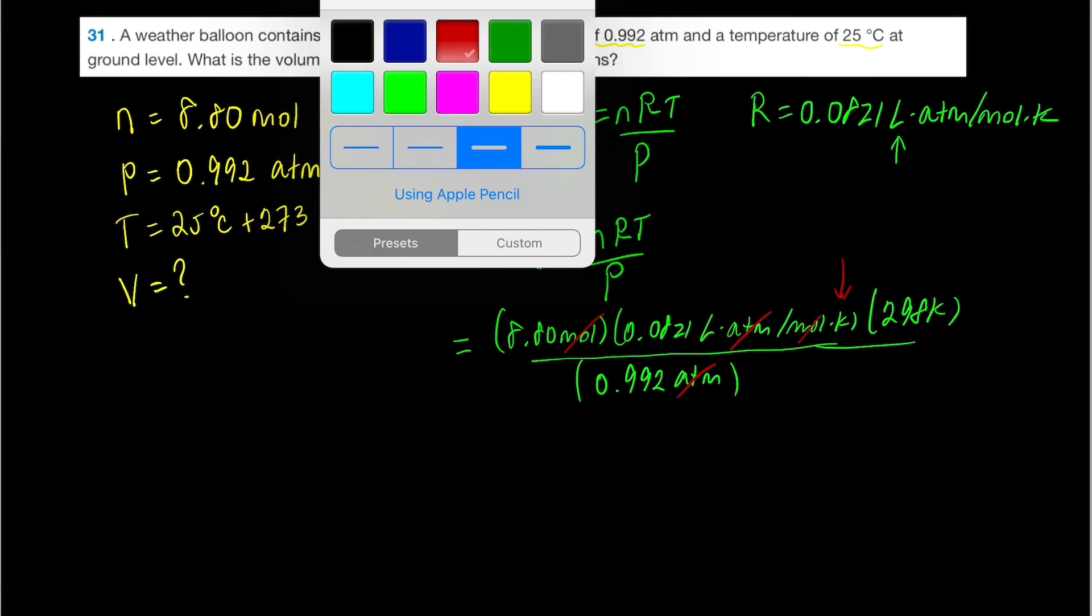And now you can see how the Kelvin is going to cancel. So everything cancels except the volume, and that's going to be the units of the final answer here. Grab your calculator, and let's punch this in. And I get 217 liters.